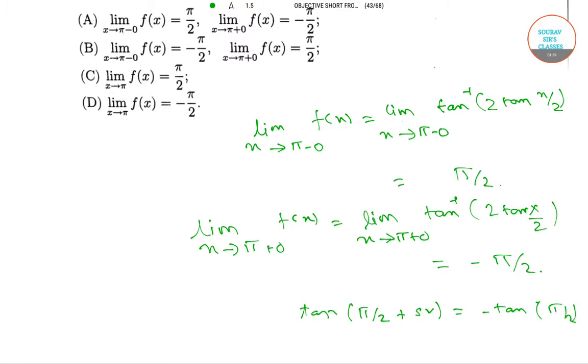So option A is correct: the limit as x tends to pi minus 0 of f(x) equals pi by 2, and the limit as x tends to pi plus 0 of f(x) equals minus pi by 2.